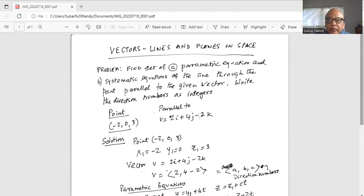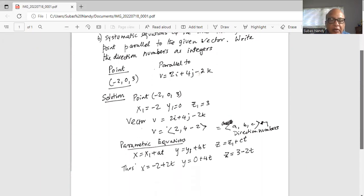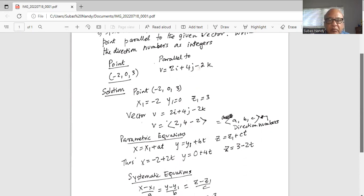So parametric equation of the line passing through the point is x equal to x1 plus at. A is 2, b is 4, and c is -2. These are the directional numbers coming from the vector to which the line will be parallel. So x is x1 plus a times t. This is the parametric equation.